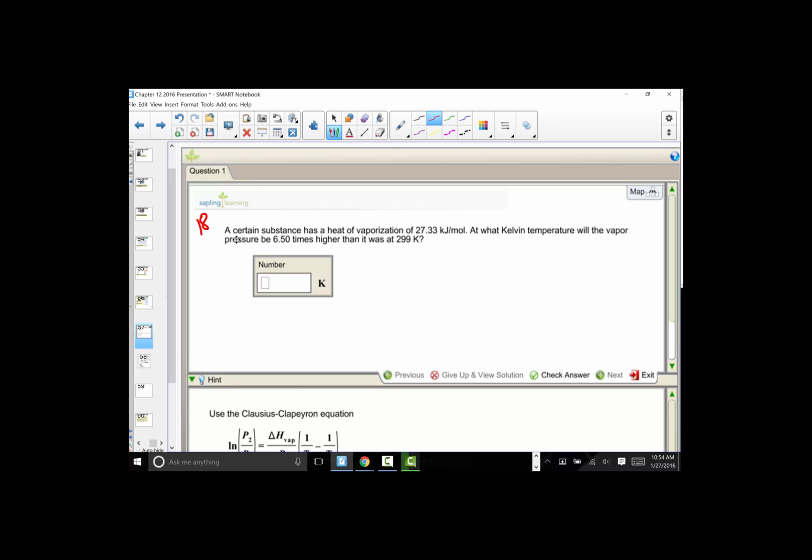A certain substance has a heat of vaporization, and that's given to us as 27.33 kJ per mole. At what Kelvin temperature will the vapor pressure be 6.5 times higher than it was at 299 Kelvin?